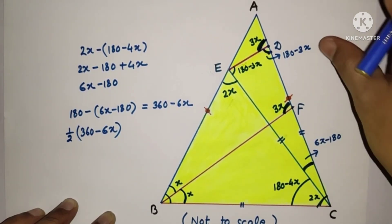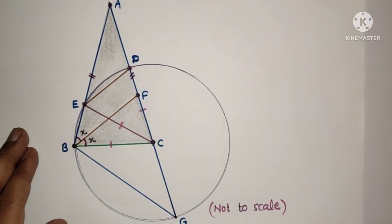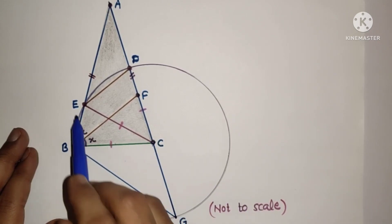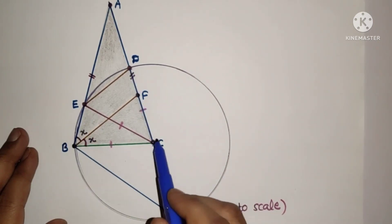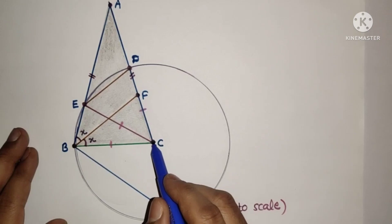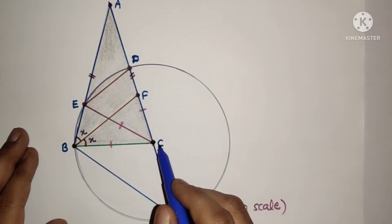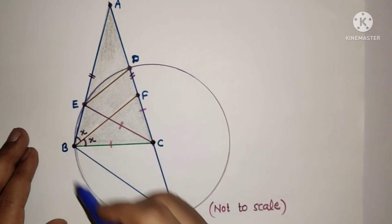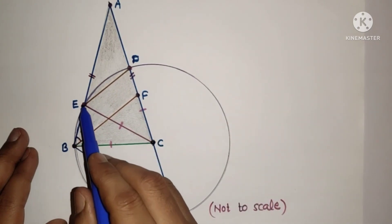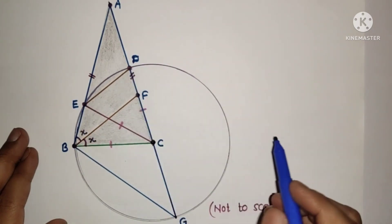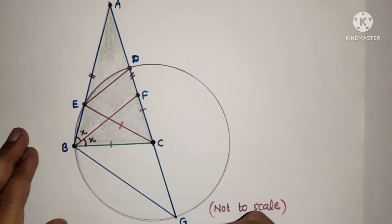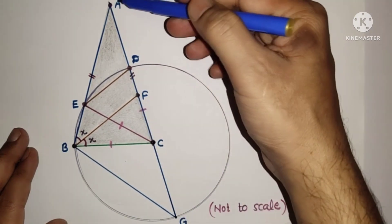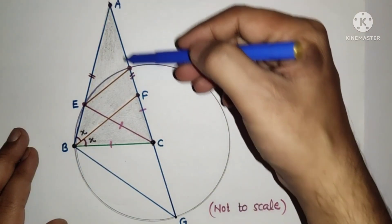We have another method. Here is the diagram. BC equals EC equals DC since all three are given equal. Taking C as the center and CB as radius, we can draw a circle which passes through points E and D also. CB, CD, and CG are all radii. We extend AC up to point G.